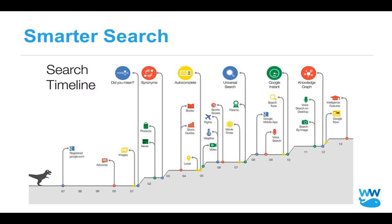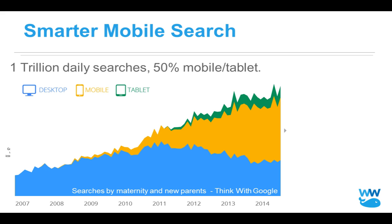Looking at mobile search — there are about a trillion daily searches, with 50% on mobile and tablet. However, I don't like looking at the overall average because it's important to look at individual keywords. These searches by maternity and new parents are disproportionately mobile and tablet. Just because the average is 50%, your keyword may be disproportionately desktop or mobile. You can imagine parents being like: if you ever wonder why mobile is high, it's because you have a baby in one arm and need to figure out how to swaddle.